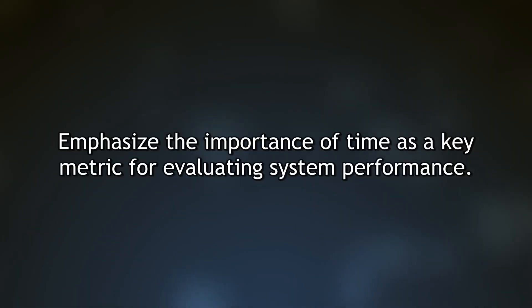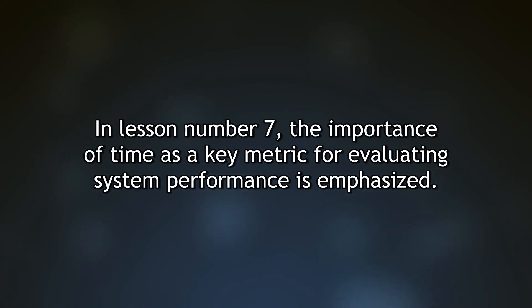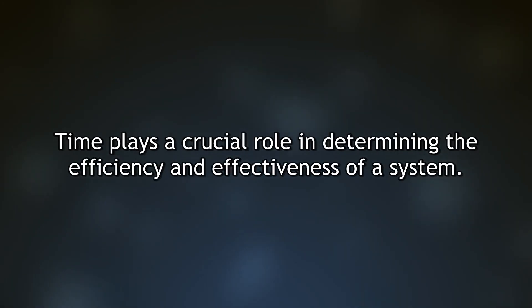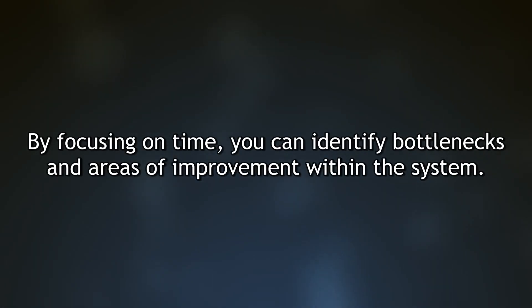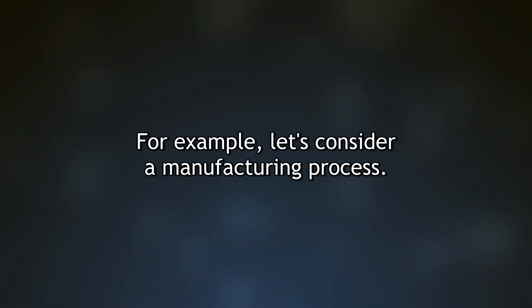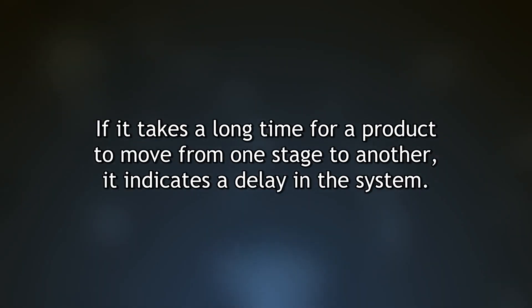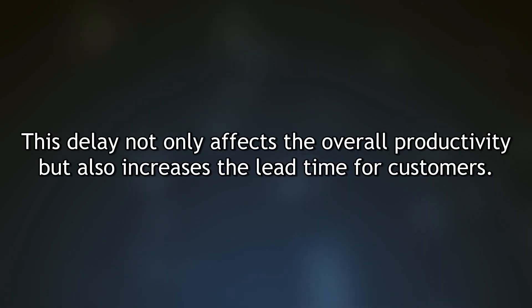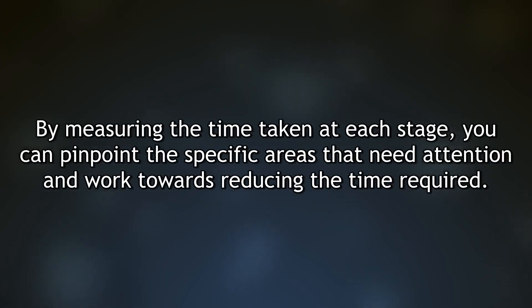Lesson 7: Emphasize the importance of time as a key metric for evaluating system performance. Time plays a crucial role in determining the efficiency and effectiveness of a system. By focusing on time, you can identify bottlenecks and areas for improvement. In a manufacturing process, a long transit time between stages indicates a delay that affects overall productivity and increases customer lead time. By measuring the time taken at each stage, you can pinpoint areas needing attention and work to reduce them.